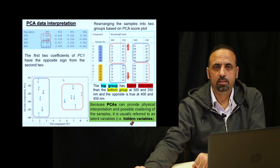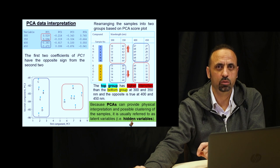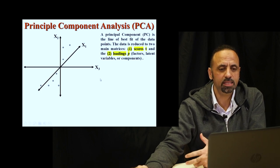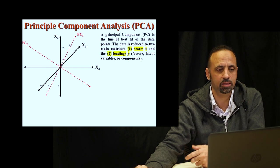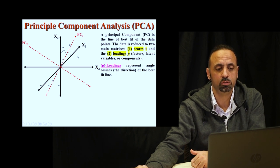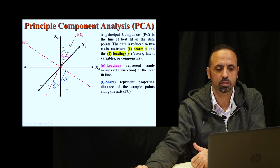That's why principal components are called latent variables or hidden variables — we cannot see this information in our normal variables. From a mathematical point of view, the angle between the suggested principal component and the original axis is called the loading, and the distance from each data point to the principal component is called the score.